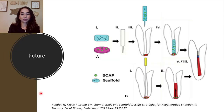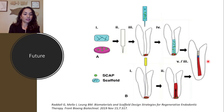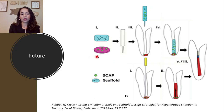This image from a group at Dalhousie University in Canada highlights two models. Panel B — the cell-free model — involves over-instrumenting with a file to stimulate bleeding and achieve the desired results. Panel A shows the cell-based model, where stem cells and a scaffold are combined outside of the tooth and then injected — another way in which regenerative endodontic procedures can be performed.